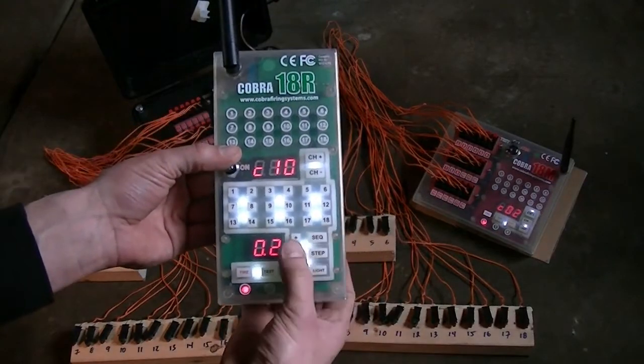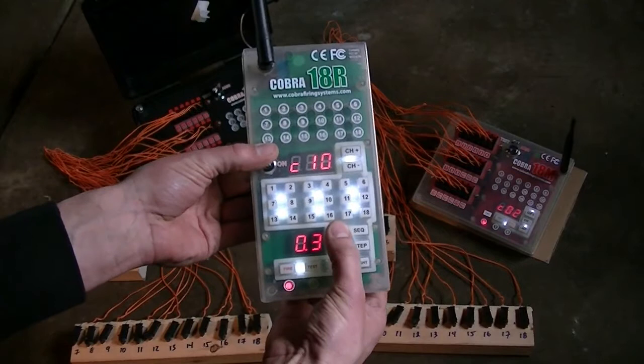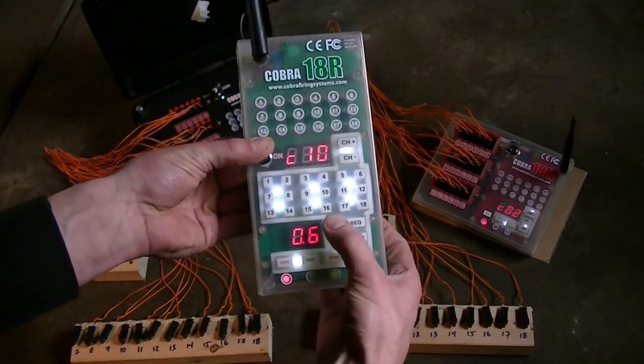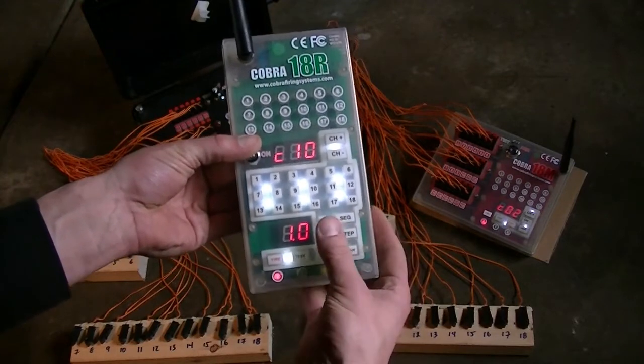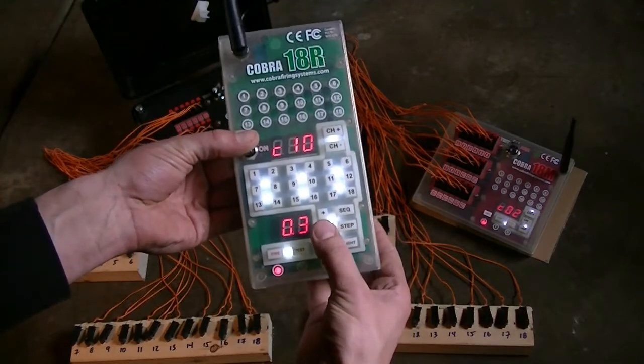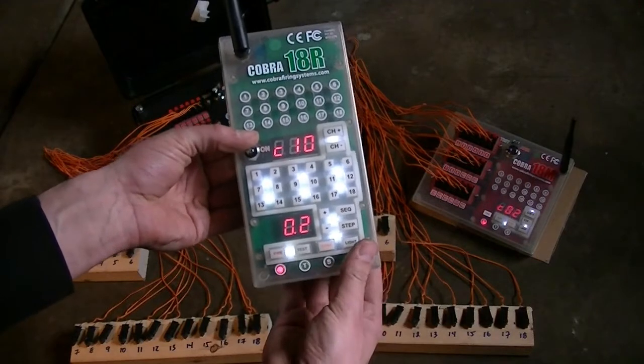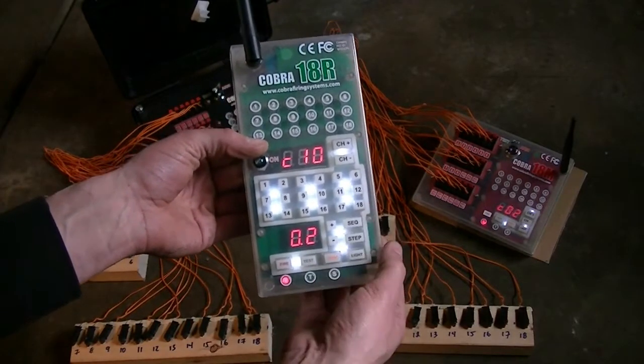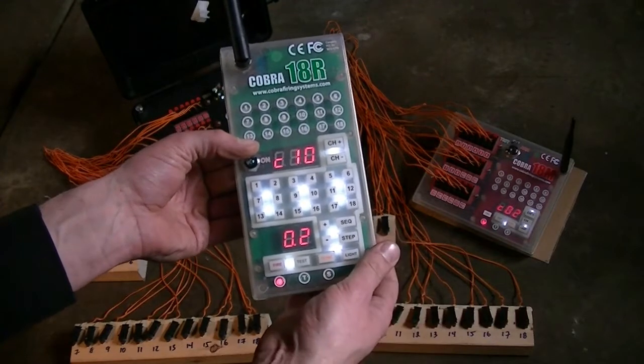Previously what you would do is from this section here you can control your actual timing, so this is for example 0.2 seconds, one second. You can take this up as high as you want, and we'll just leave it at 0.2 seconds for now. Before, you would just press the sequence button and that would automatically execute the sequence.